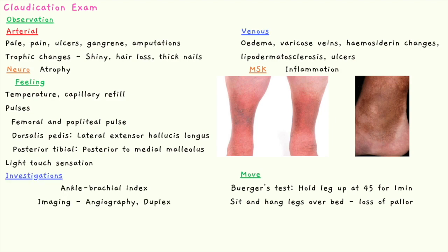For investigations, you do an ankle brachial index, comparing the blood pressure at the ankle to the brachial artery. This is useful because peripheral vascular disease affects the ankle pressure while the brachial artery supply is minimally affected. Generally, a value less than 0.9 is normal, less than 0.5 is concerning, and greater than 1.1 may suggest calcification of the arteries.